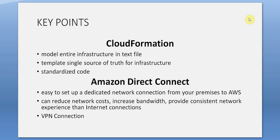Amazon Direct Connect: easy to set up a dedicated network connection from on-premises to the AWS cloud. It can reduce network costs, increase bandwidth, and provide a more consistent network experience than standard internet connections. You can also use a VPN connection.